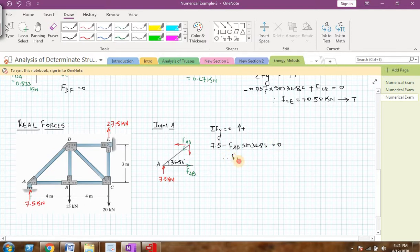I can get the value of FAD as plus 12.5 kN. Since I am getting plus, it means my assumption of AD as compression is correct. Now, let me apply the next equilibrium equation summation of Fx equal to 0 taking the forces in this direction as positive. AB is in that direction so I will write it as plus FAB.